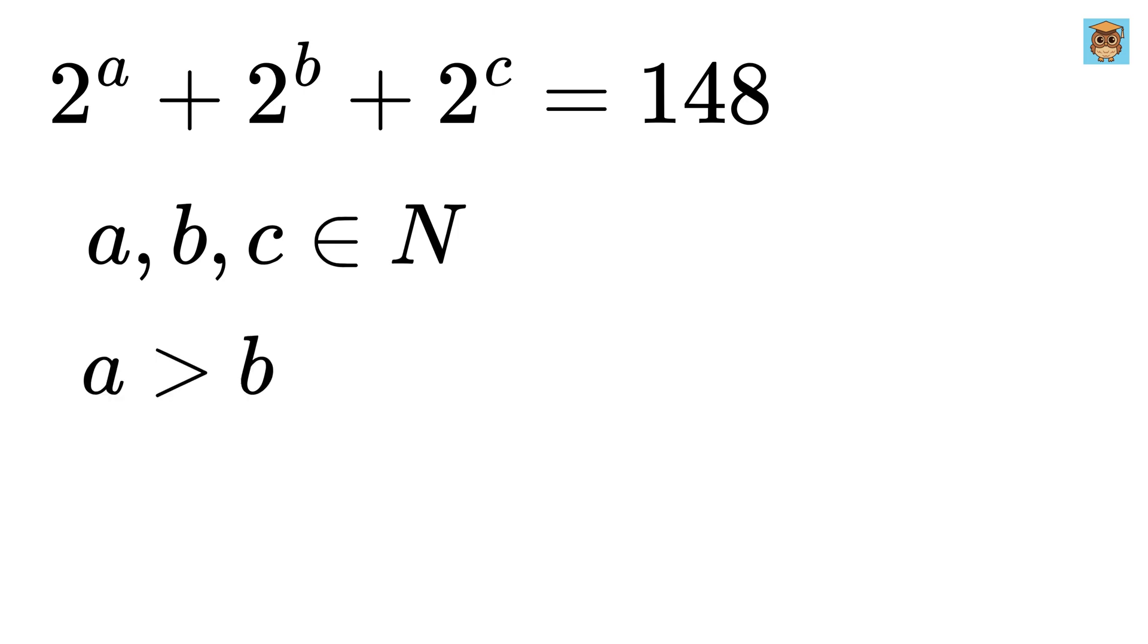2 to the power of A plus 2 to the power of B plus 2 to the power of C equals 148. Our goal is to find the values of A, B, and C, where each of them is a natural number, and A is greater than B, and both are greater than C.